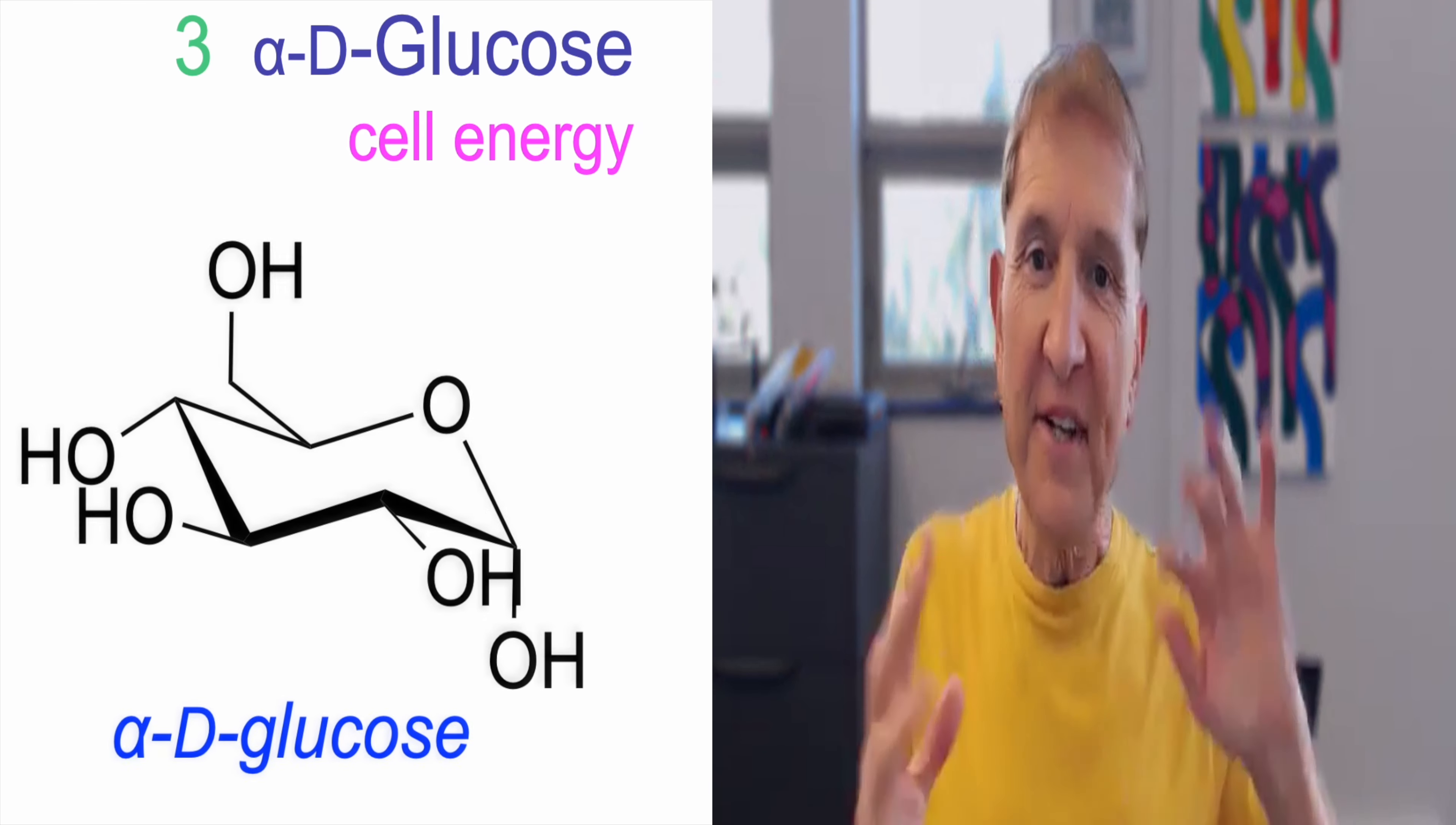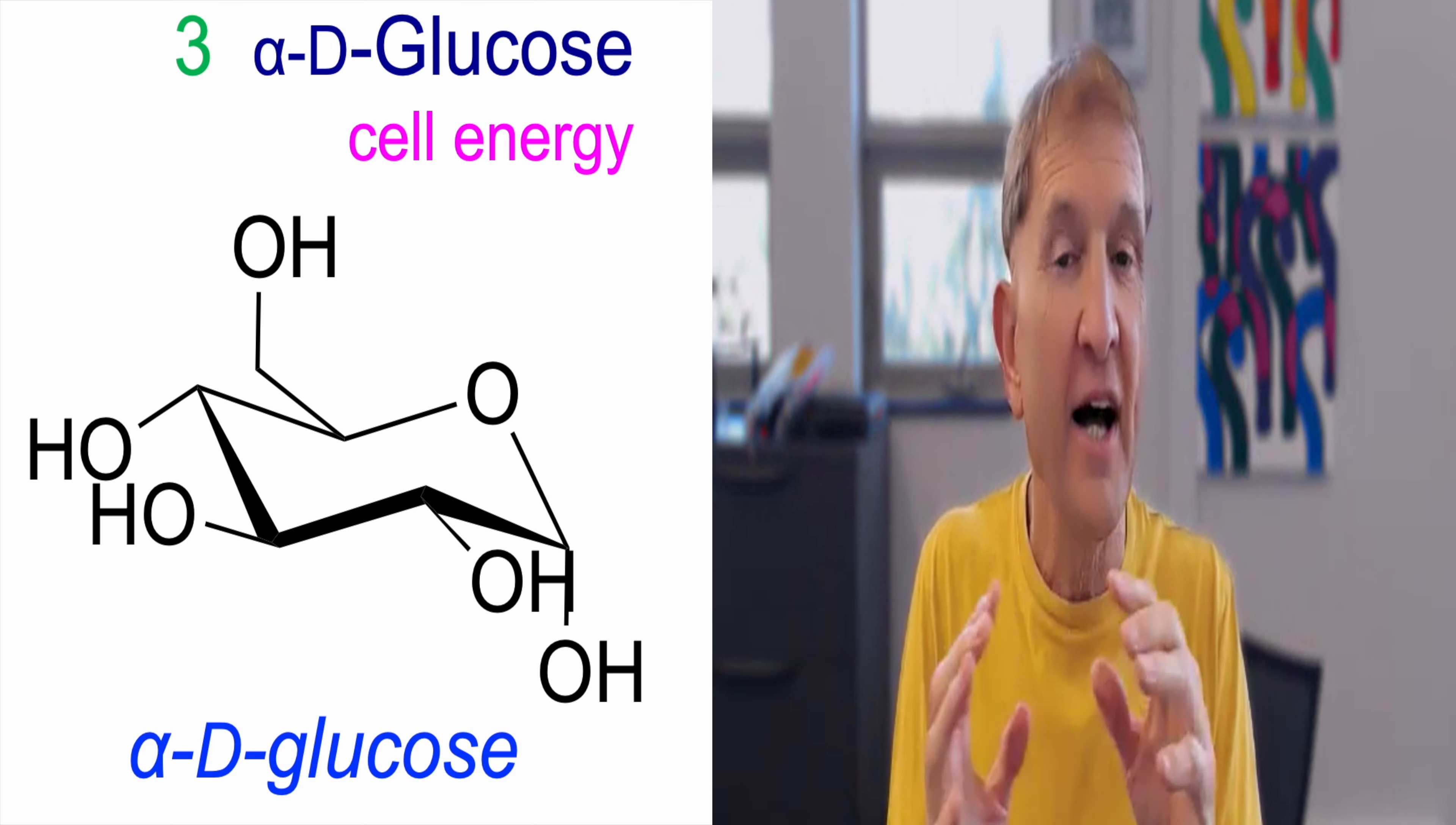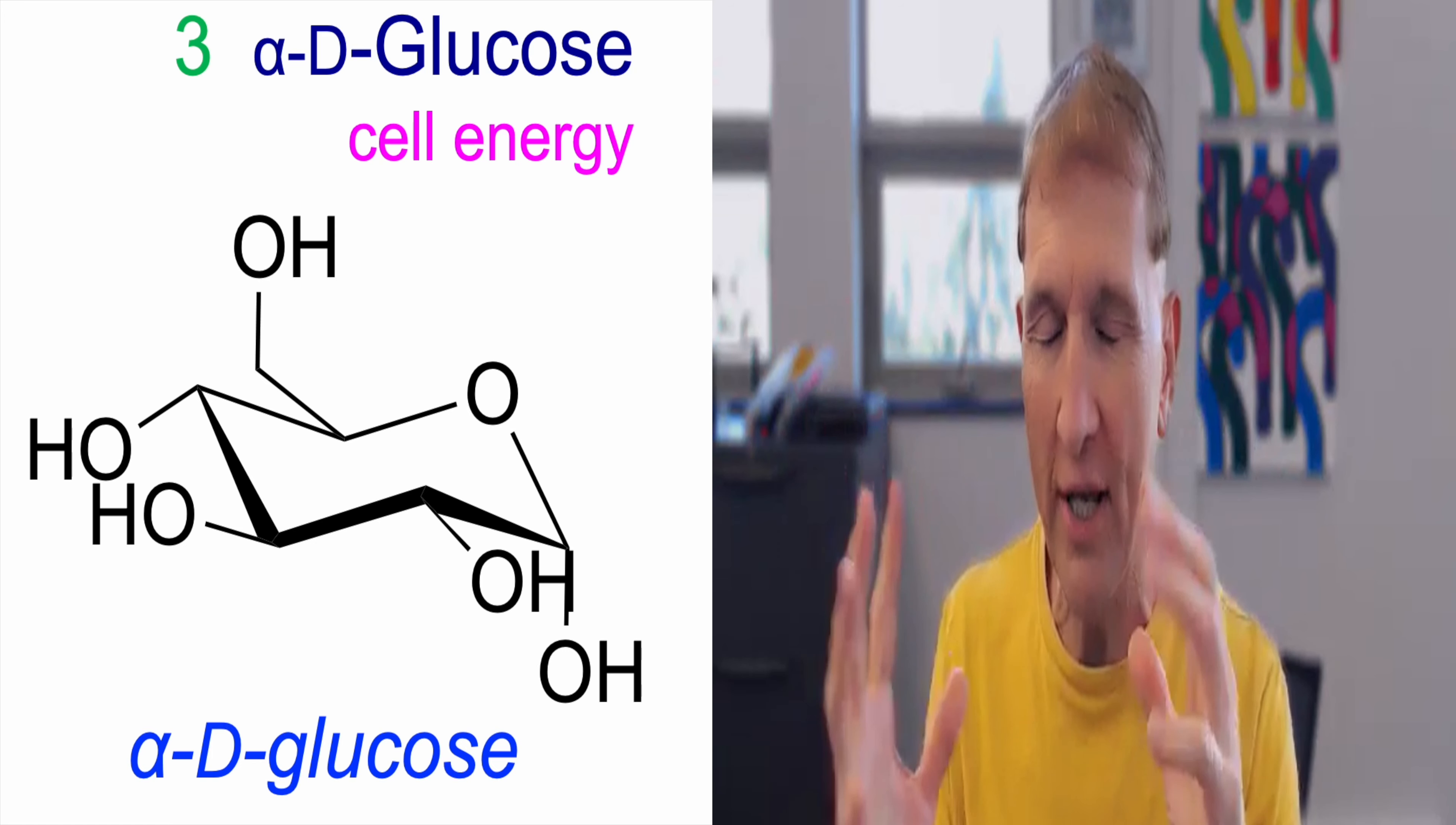Monosaccharide to learn number three, glucose, D-glucose. And this is the way I suggest you draw it. Just as for D-ribose, I suggest you draw it in the same way in that five-membered ring form every single time you think of D-ribose. And that way it's easier to learn when it's in one shape.